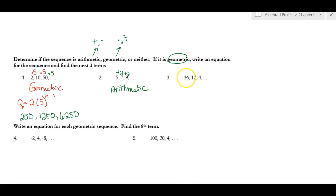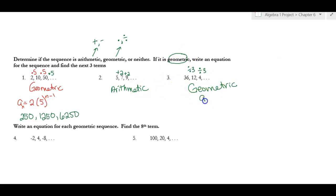For the sequence 36, 12, 4: to get from 36 to 12 I divide by 3, and from 12 to 4 I divide by 3. That pattern holds twice, so it's geometric. The equation starts with 36. Remember, when dividing by 3, we write it as a fraction — dividing by 3 puts the 3 on the bottom — so the common ratio is one-third. The equation is a sub n equals 36 times (1/3) to the (n minus 1).